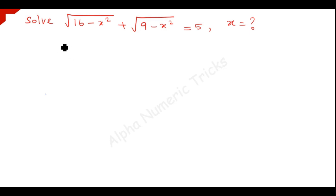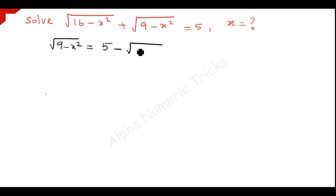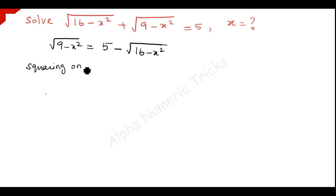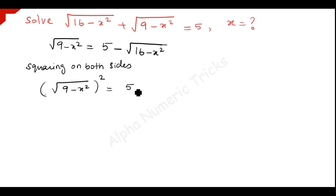Take the square root of 9 minus x squared to this side and take this term to the right hand side. When you are taking plus square root of this to the other side, it becomes minus square root of 16 minus x squared. After that, we square on both sides to eliminate this square root. Squaring on both sides, we have square root of 9 minus x squared, the whole squared, is equal to 5 minus square root of 16 minus x squared, the whole squared.